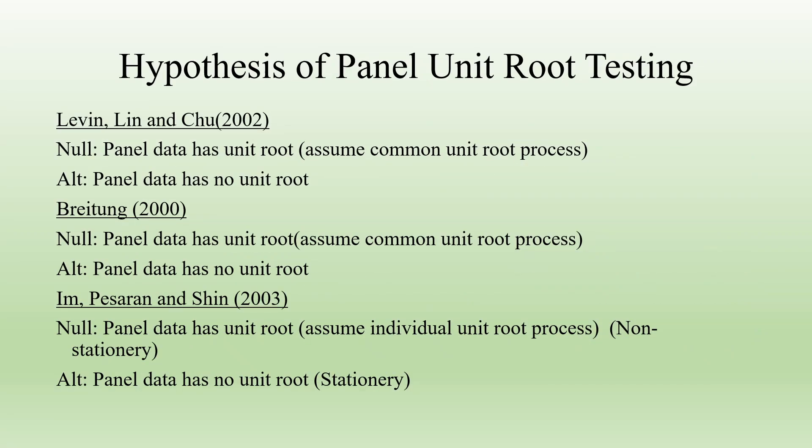The hypotheses for the Levin, Lin and Chu test are: null hypothesis — panel data has a unit root, assuming a common unit root process; alternative — panel data has no unit root. For the Im, Pesaran and Shin test (2003): null — panel data has a unit root, assuming a common unit root process; alternative — panel data has no unit root and the data is stationary. The null hypothesis assumes an individual unit root process and the data is non-stationary, while the alternative is that panel data has no unit root and the data is stationary.